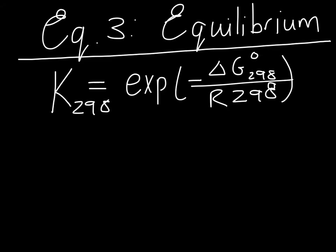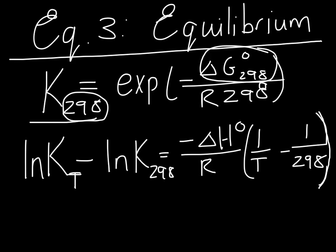Our third equation comes from our equilibrium relationships. We can calculate our equilibrium constant at 298 Kelvin from the thermodynamic parameters of our reaction. We can now use Van't Hoff's equation to calculate our equilibrium constant at the final temperature in our reaction vessel which is our unknown variable with that K value at 298 Kelvin.